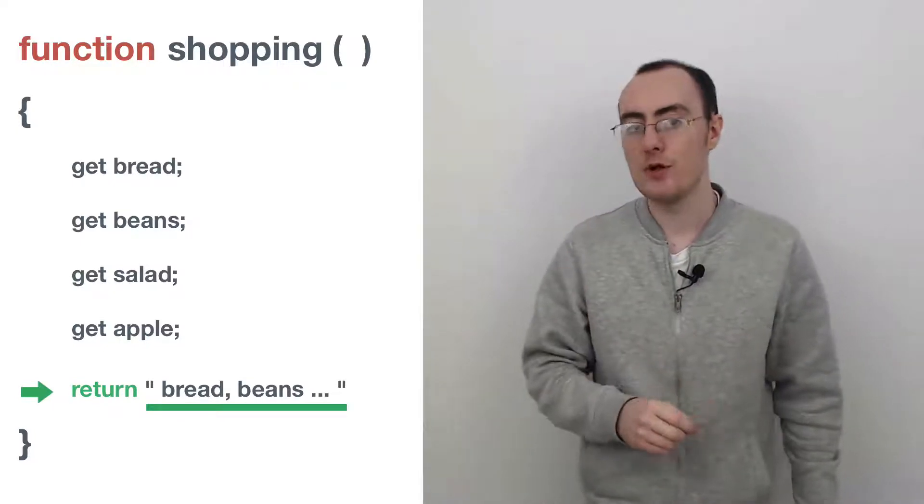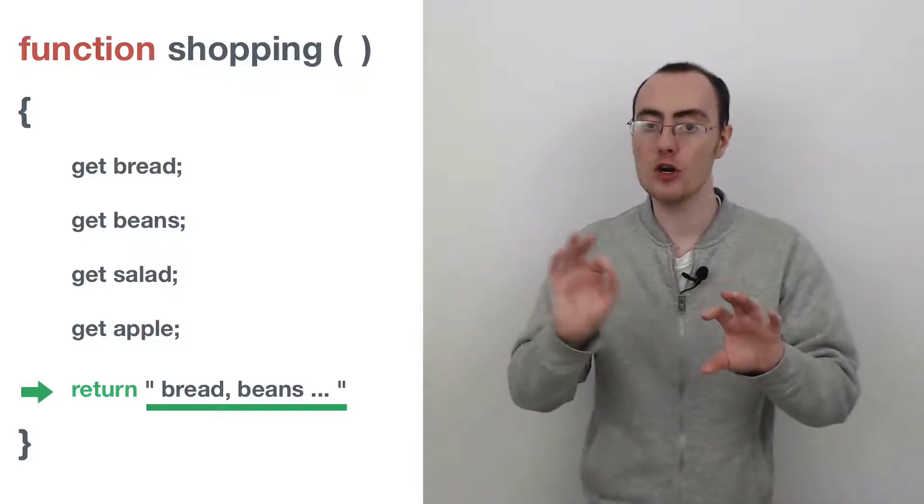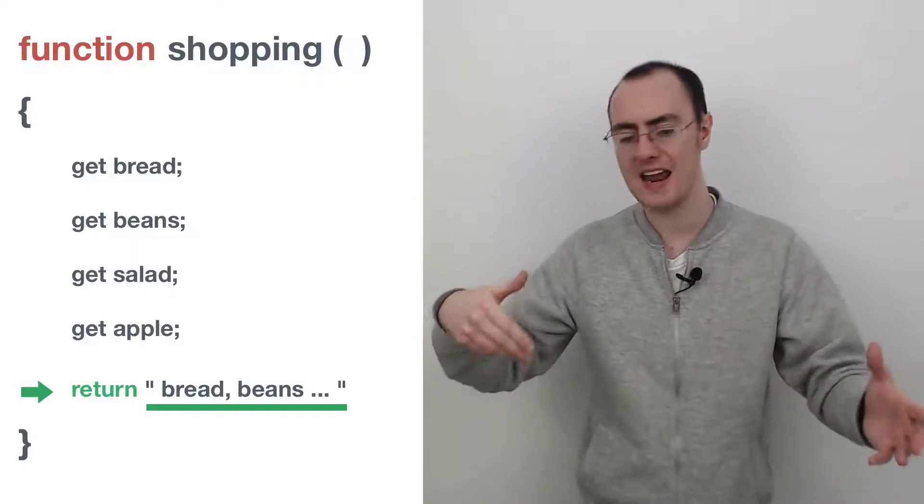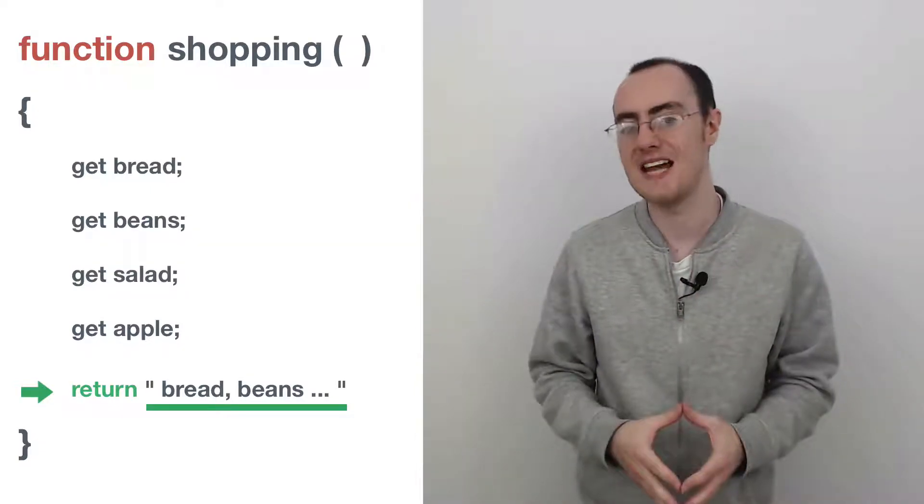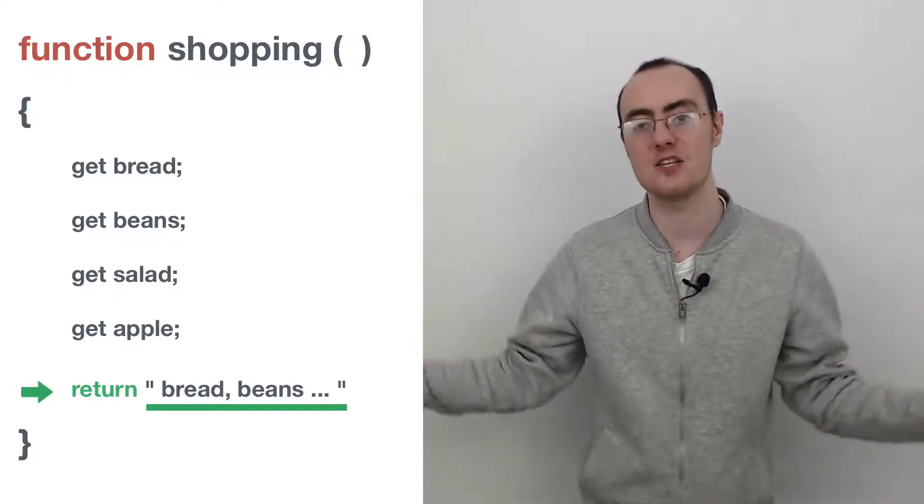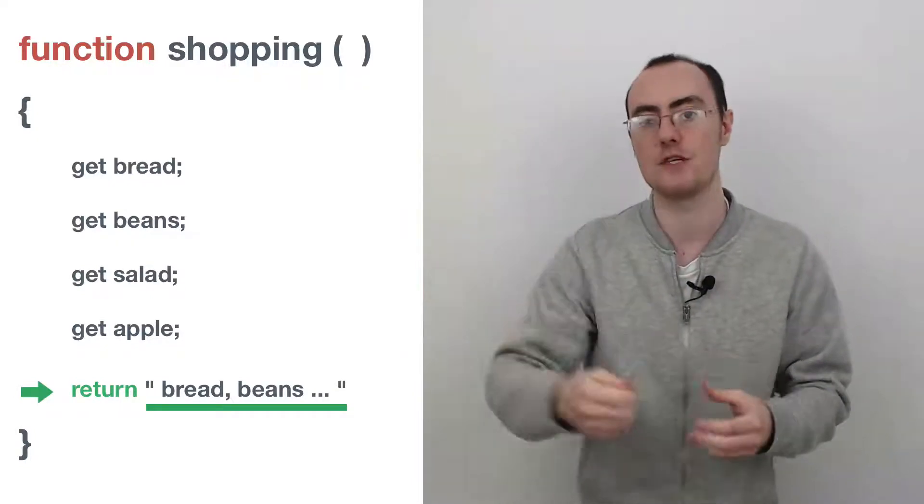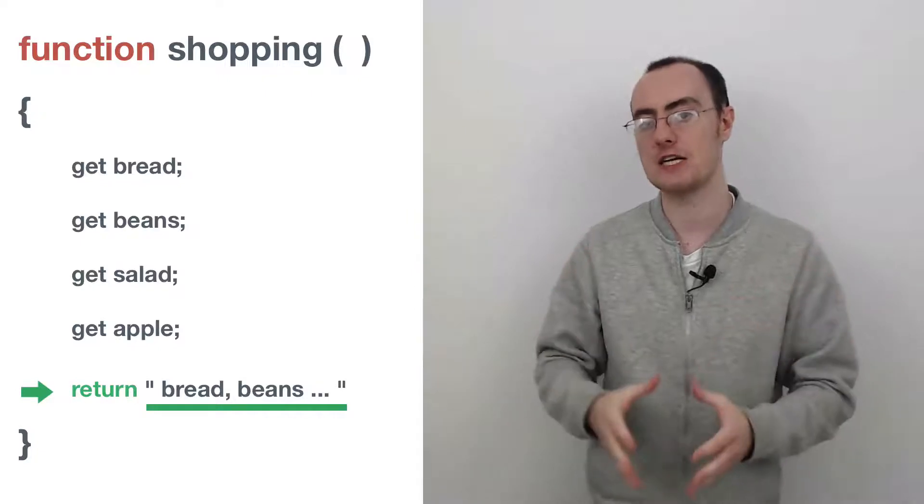It's basically just going to return that piece of information. So for example, I could return a string with all of the items that I have purchased. I could also return an object, an array or any other type of data that I'd like. But what it is, is it's a summation of the entire execution. What do we want to get out of this function once it's finished executing?